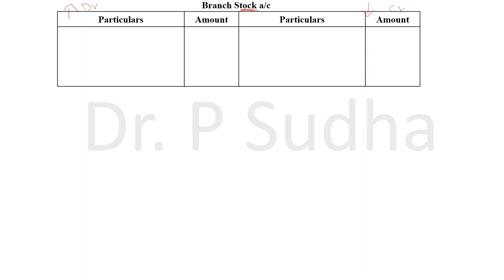The first item we will record is opening stock. For all assets, the opening stock will be recorded in the debit side — to balance brought down. Then, if the head office is sending goods to the branch office, the existing stock will increase because stock comes into the business. So, to goods sent to branch, write the amount in the amount column.